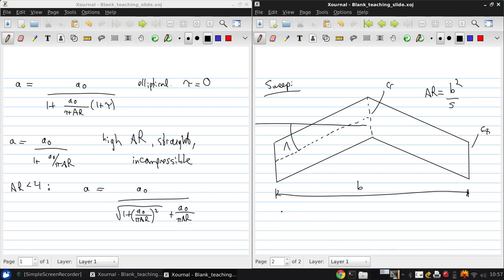For this kind of a configuration, a further modified formula for the lift slope is given by this. Essentially the lift slope is modified by cosine lambda.